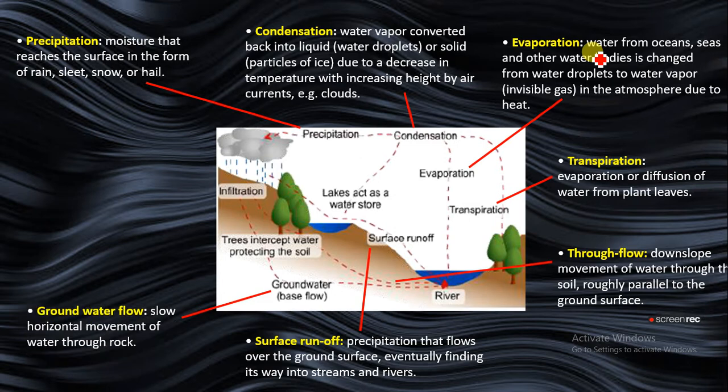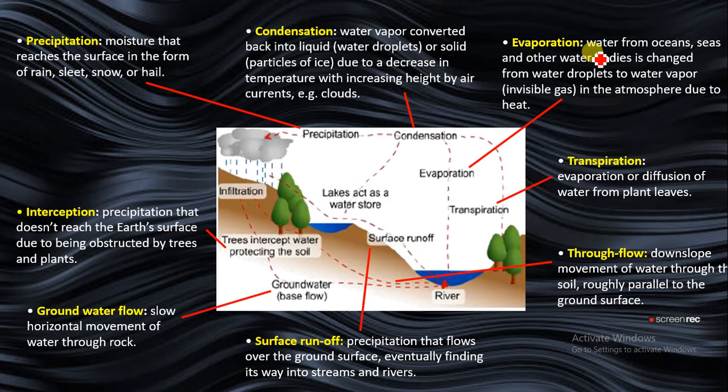Then you have interception by trees and buildings. This happens before the water reaches the earth surface - it lands on trees which are a form of interception, and this helps to reduce soil erosion.